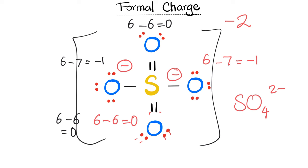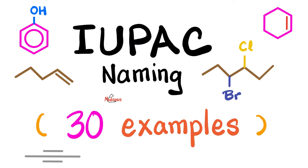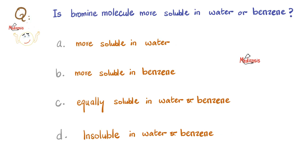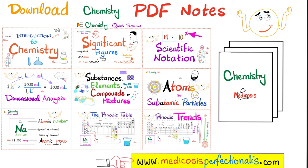You do not want to miss the next video in this organic chemistry playlist where we'll talk about IUPAC systematic naming. Quiz time: is bromine molecule more soluble in water or more soluble in benzene? Let me know your answer in the comments — you'll find the answer key in my general chemistry playlist. You can download my organic chemistry notes, general chemistry notes, biochemistry notes, biology notes, physiology notes, and all kinds of notes on my website: medicosisperfectionist.com.